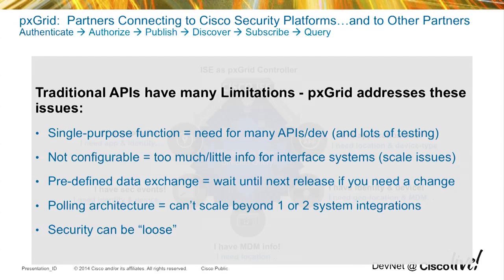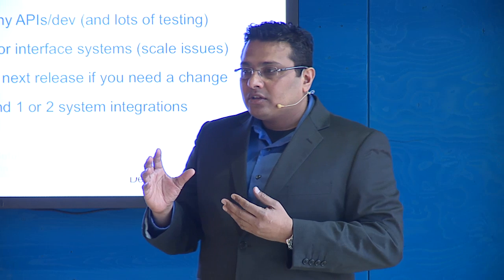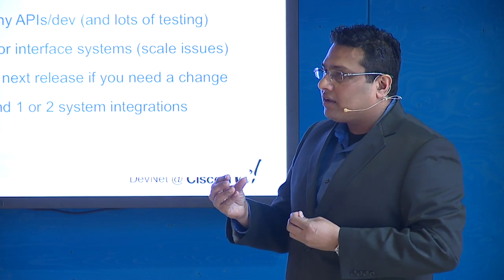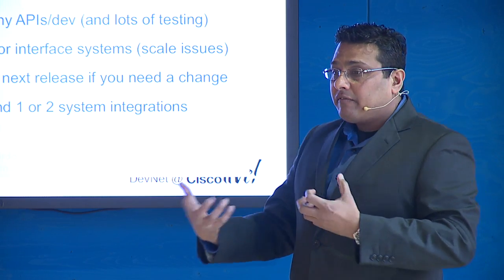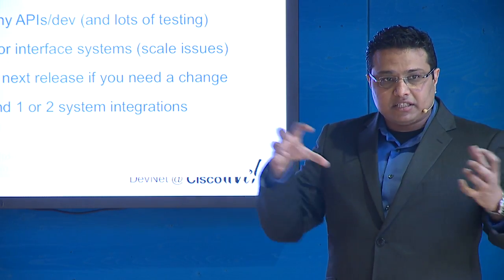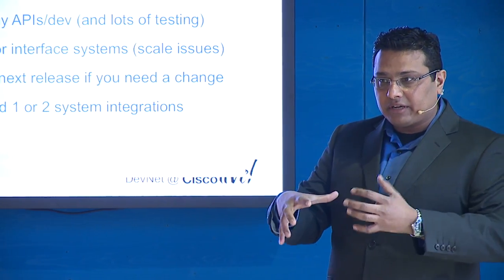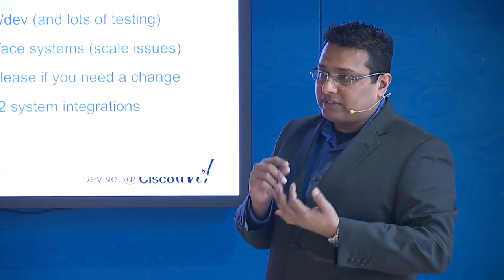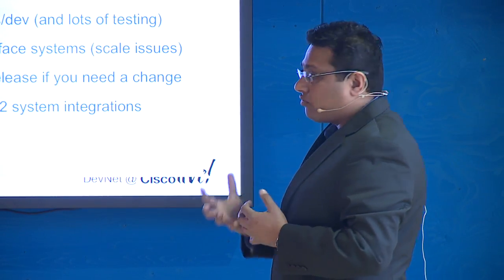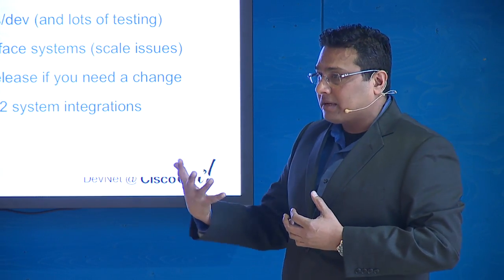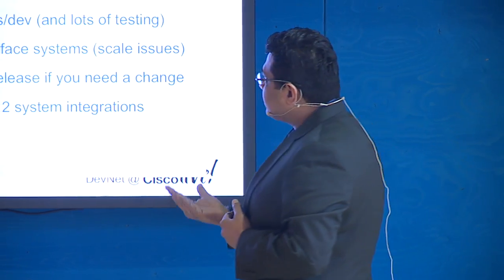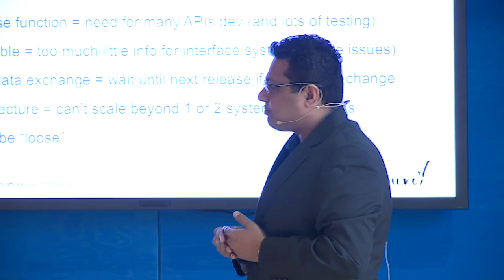Because we are Cisco and security is a concern, PX Grid is a very secure environment. Just as we authorize and authenticate users and devices, we authorize and authenticate third-party systems onto the grid. You first need to authenticate, you get authorized for what you can and can't do, and also the infrastructure is secured with encryption. Those are the reasons why we chose to go down this path.